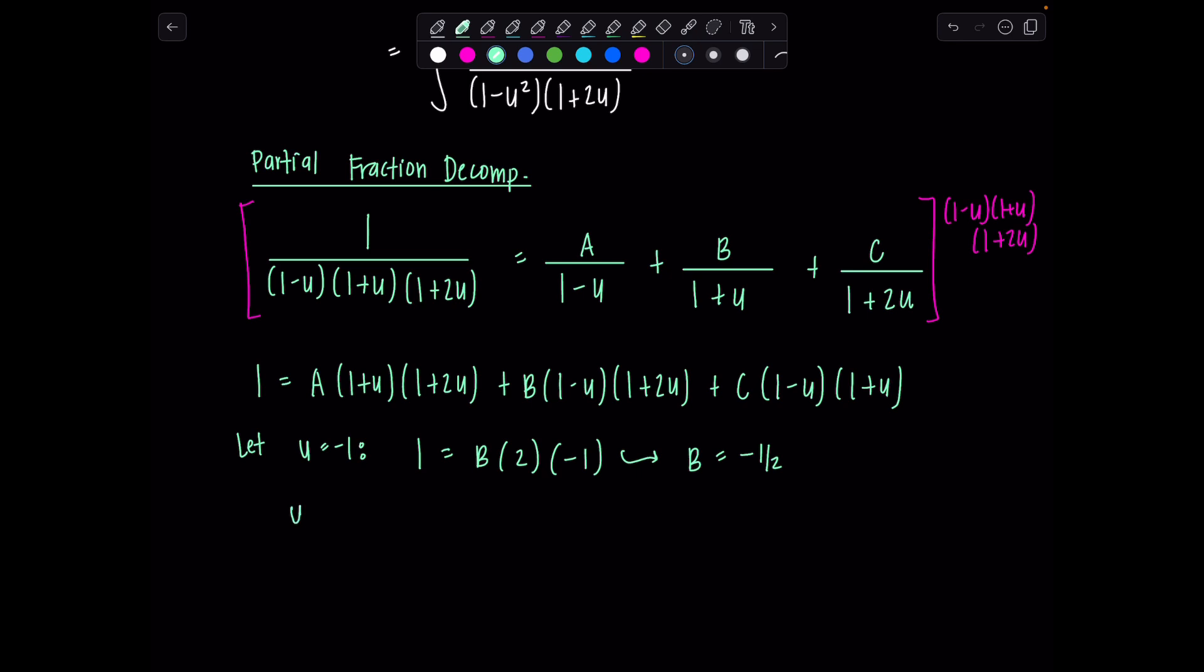Okay, let's keep the fun going. Let's let u equal negative 1 half. Then I have 1 equals, I chose that, so this factor is 0, so this whole term is gone. This factor is 0, this whole term is gone. And then now I'm going to substitute in negative 1 half for u. So I have c times 1 minus negative 1 half, that's going to be 3 halves. And then 1 plus a negative 1 half, that's another half. So that's 3 fourths c equals 1, so c is 4 thirds.